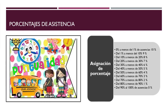En el artículo 31 se encuentran los criterios para la asignación del porcentaje correspondiente a la asistencia. Para la asignación de este porcentaje, en cada asignatura y en cada período, el docente tomará como referencia el número total de lecciones impartidas, las ausencias y llegadas tardías injustificadas según la tabla correspondiente.